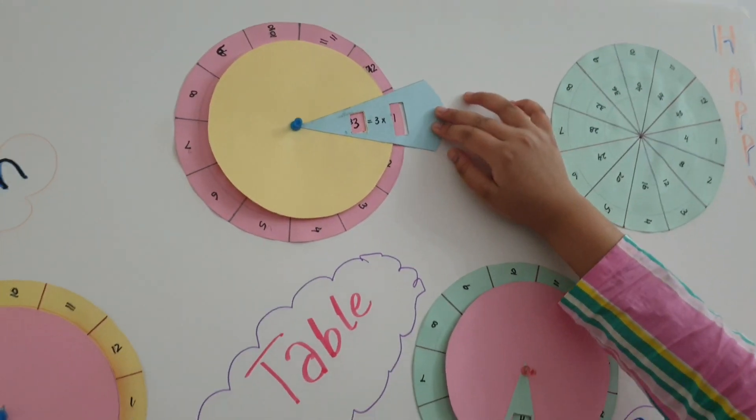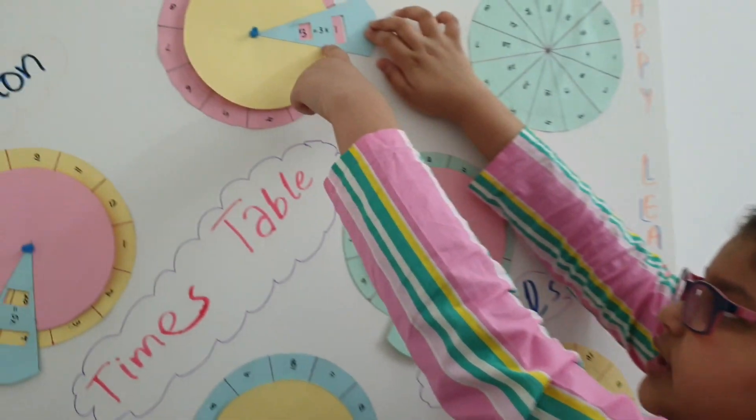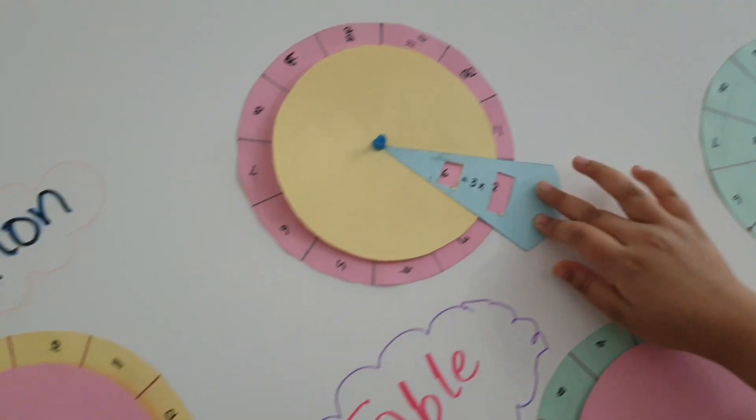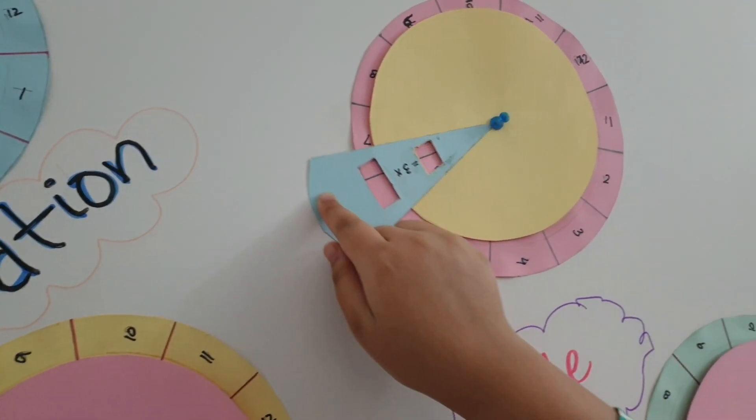I am giving you the demonstration. This is the three timetable. It works like a V, like this. You can move it to any number.